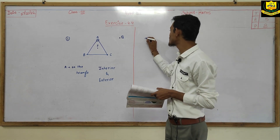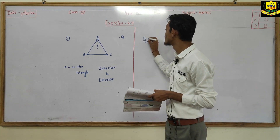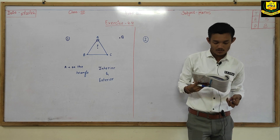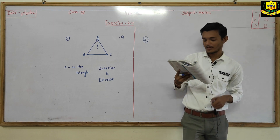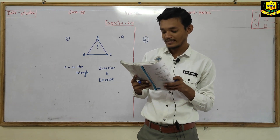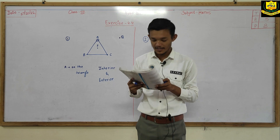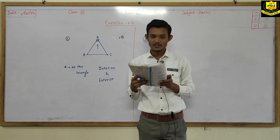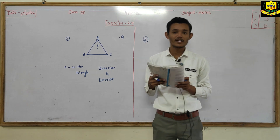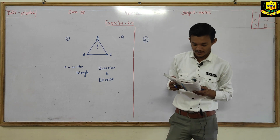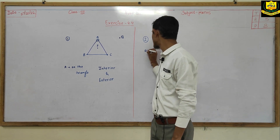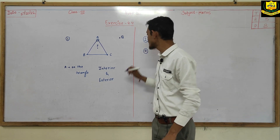Similarly, question number 2. We first have to see the figure. It shows triangle ABC in which AD is a line segment which divides the triangle into two parts. The first question from this figure is: identify the three triangles in the given figure.